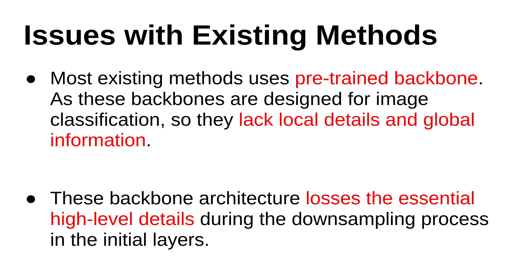Second, these backbone architectures lose essential high-level details during the downsampling process in the initial layers. If you have seen any backbone architecture like VGG, ResNet, or ResNeXt — what they do is begin with a convolution layer with a stride of 2 followed by a 2×2 pooling. So in these few initial layers they downsample the feature map by a factor of 4, and during these initial layers we lose the high-level information which is really essential for salient object detection. Due to the lack of these high-level features, these existing architectures are not able to perform really well.